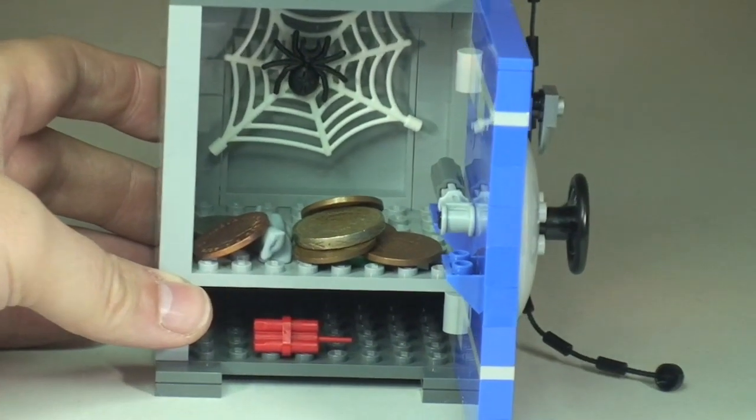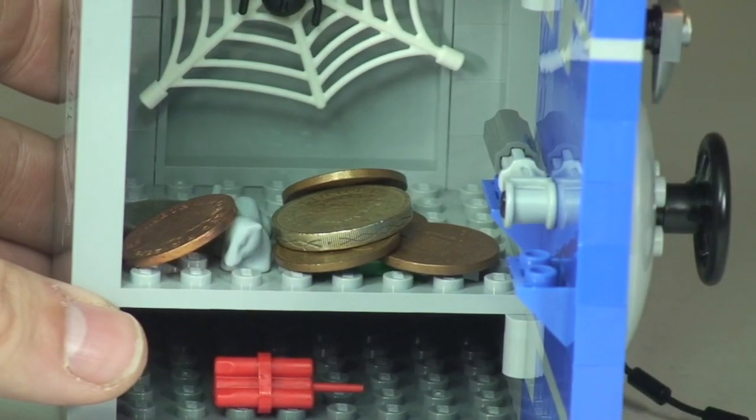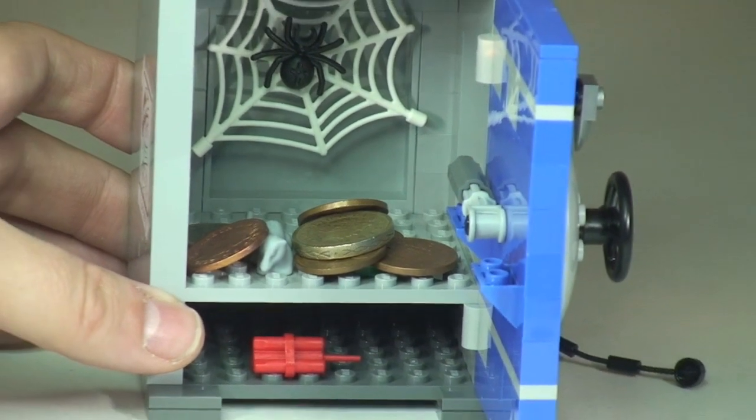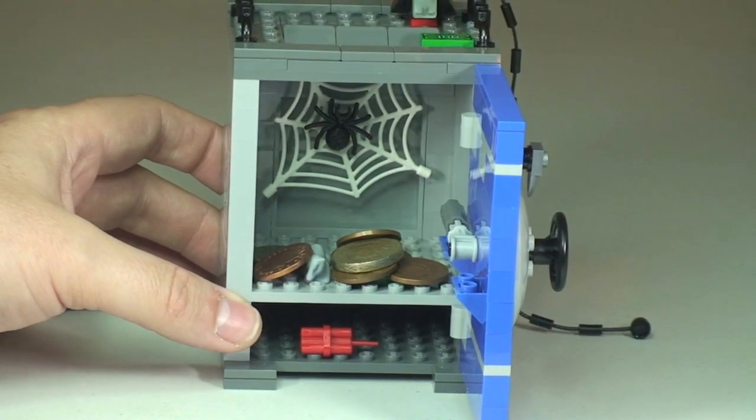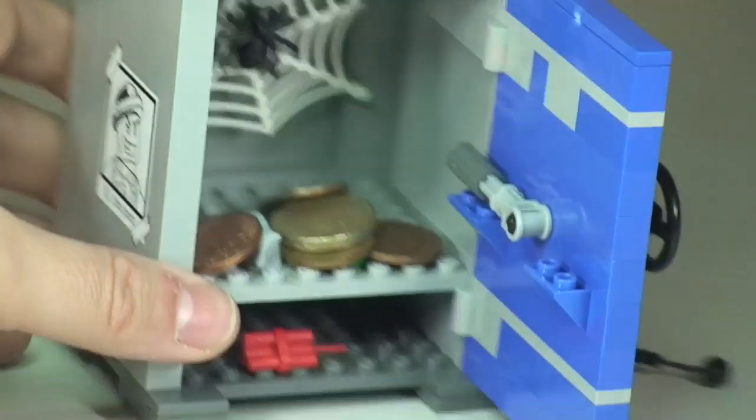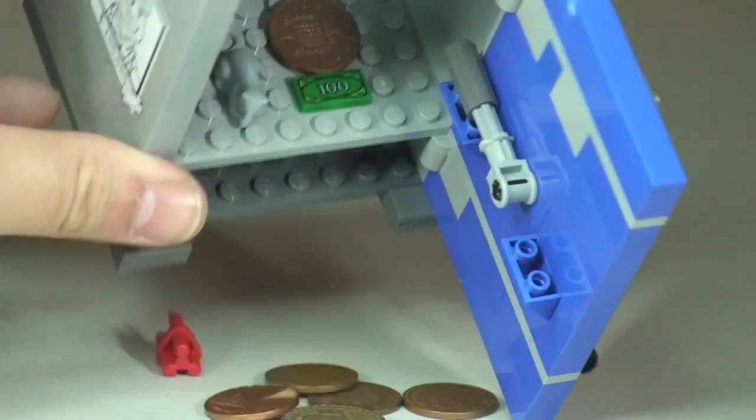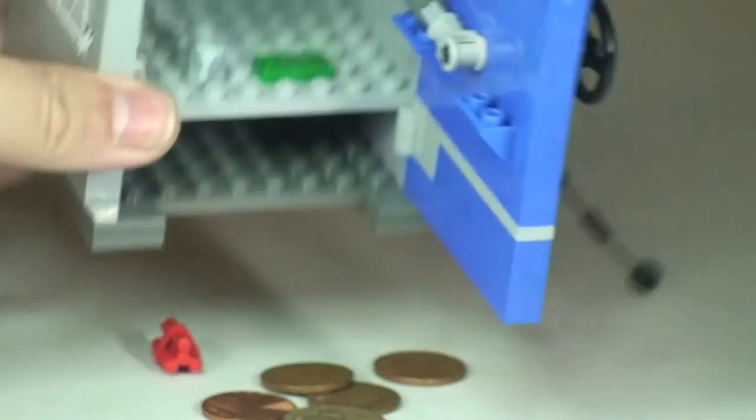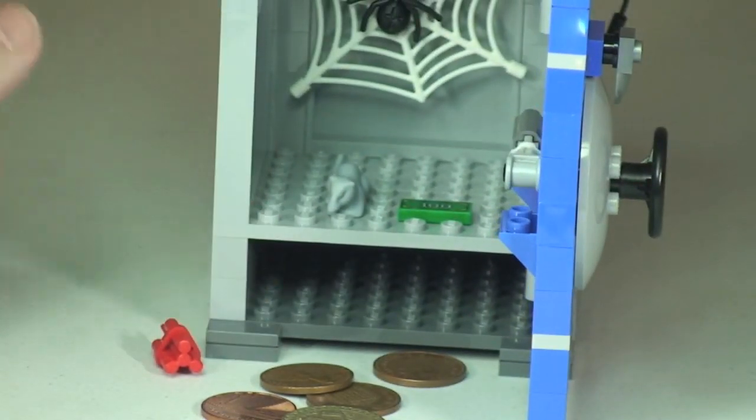When we want to get that money out again, simply turn the door mechanism, open it up, and there we can see the money down on that shelf. There's a lot of room in there. You could fit a lot of money, or you can store other valuables or use it as a little hiding place. You can get the money out - that's as easy as that.